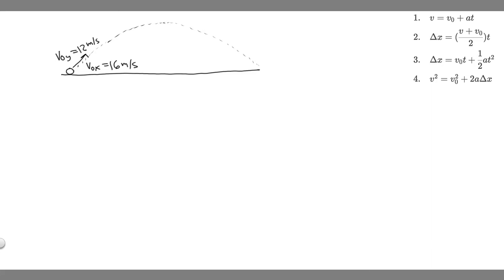In this problem, we're told a ball is kicked with an initial velocity of 16 meters per second in the horizontal direction and 12 meters per second in the vertical direction. Part A: at what speed does the ball hit the ground? Part B: for how long does the ball remain in the air? And Part C: what maximum height is obtained by the ball?